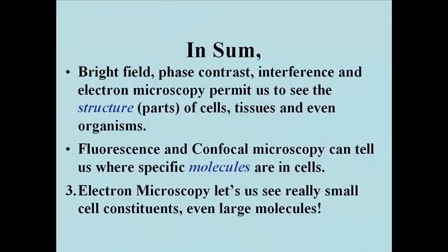To summarize: bright field and phase or interference contrast microscopy let us see the structures of and in cells. Fluorescence microscopy lets us associate specific molecules with structures, and confocal microscopy — a form of fluorescence microscopy — lets us see structures and locations of specific molecules in the context of a three-dimensional view of the entire cell, tissue, or organism. Finally, electron microscopy is a really high magnification instrument that lets us see very small cell parts, and in some cases even some very large molecules.